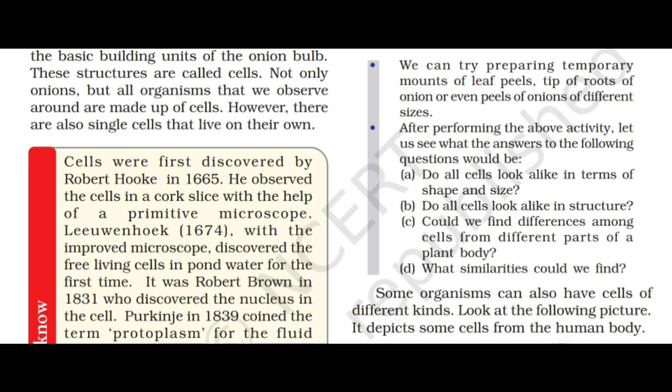Not only onions, but all organisms that you observe around are made up of cells. However, there are also single cells that live on their own. The basic building unit of the onion bulb is the cell. We have different structures that make up all organisms.